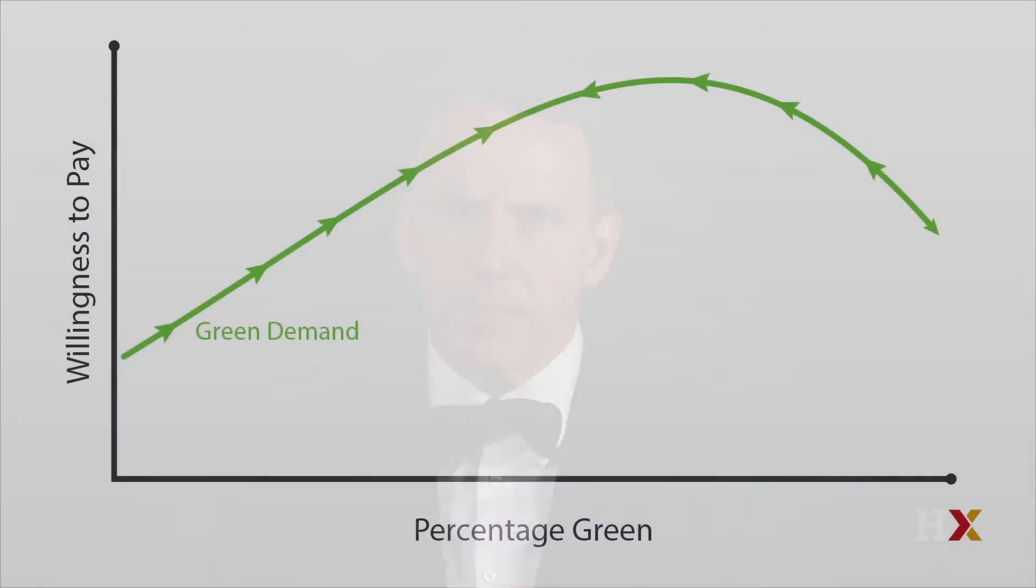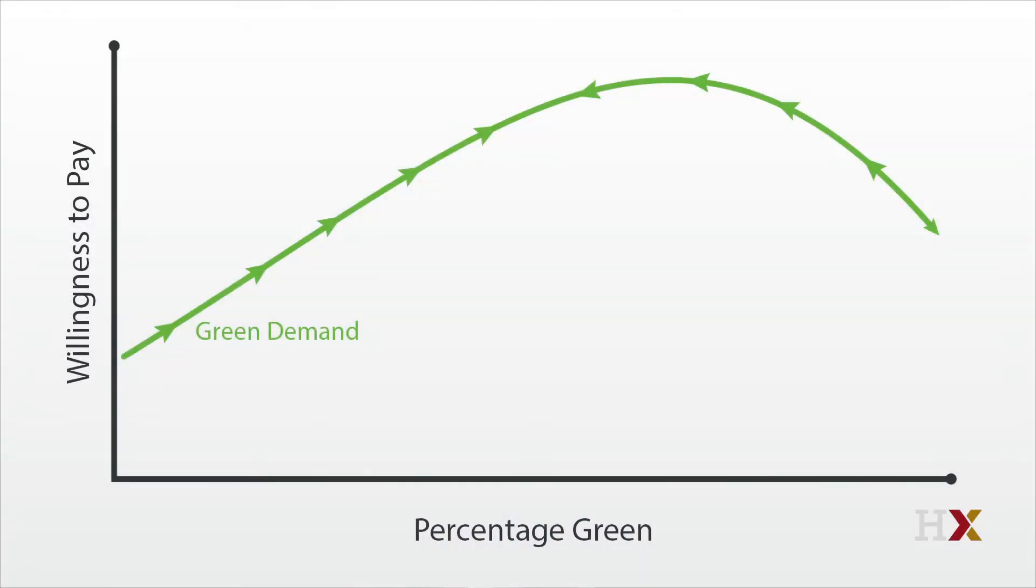In this model, everyone is pretty discriminatory. But let's change the curves a bit. Now, the greens still don't like being in an all-blue neighborhood, so their willingness to pay still rises at first with the percentage green. But then willingness to pay peaks at around 60% green.